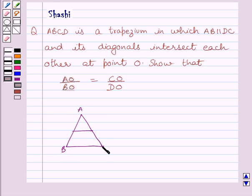That is, if ABC is a triangle given to us and DE is parallel to BC and DE is intersecting AB and AC at two distinct points that is D and E, then AD upon DB is equal to AE upon EC.